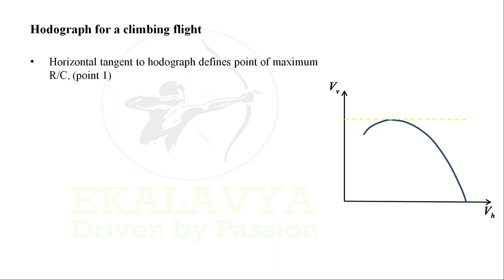Horizontal tangent to hodograph defines point of maximum rate of climb as indicated by point 1. Maximum rate of climb occurs at minimum power required. Any line from origin intersecting hodograph, say point 2, makes a slope of VV by VH.